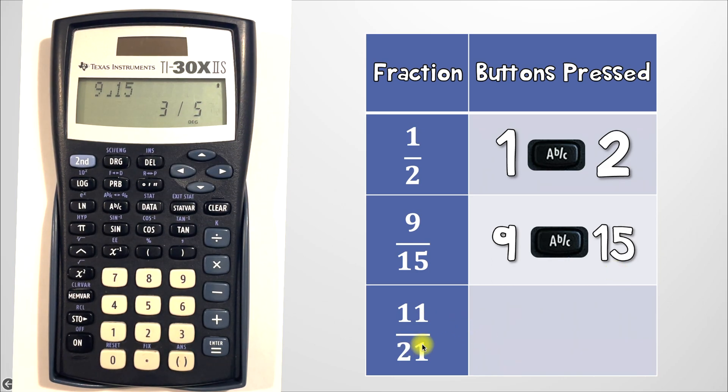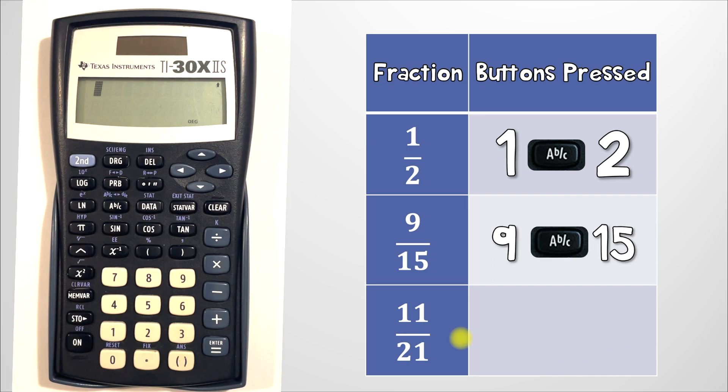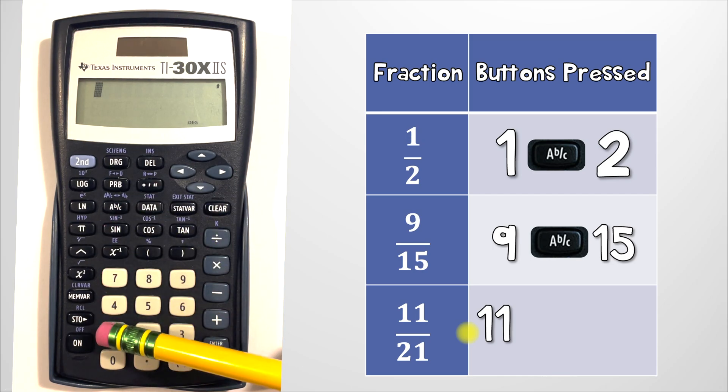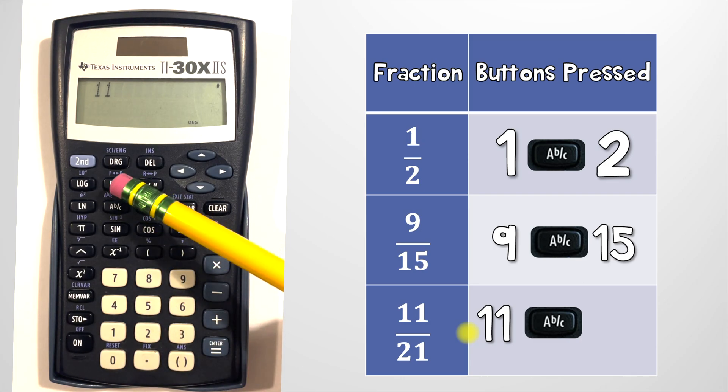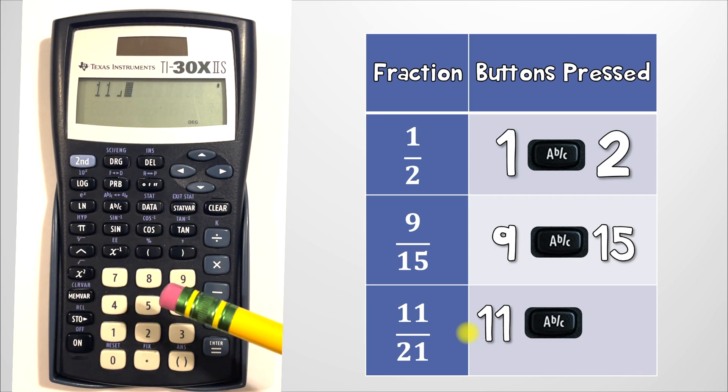So now let's go to example number 3, 11 over 21. Let's clear our calculator and the first thing we'll do is we'll enter the number 11. Next we'll hit the ABC button and finally since 21 is our denominator we'll enter 21.